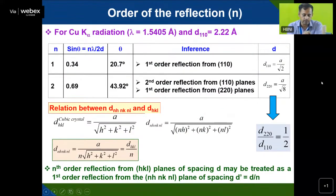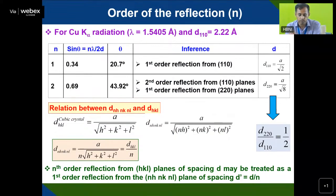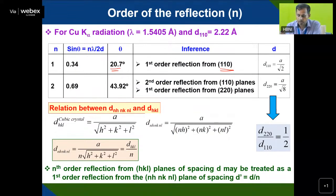Regarding the order of reflection: 2d sin θ = nλ, where n can vary from 1 to n. For n = 1 it is first order, n = 2 second order, and so on. For example, using copper K-alpha wavelength of 1.5405 Å, the D-spacing for the (110) plane is 2.22 Å, giving a peak at 2θ = 20° with sin θ = 0.34. For a cubic crystal, D₀ = a/√2. For the second order peak, it appears at 43.92°, and the (110) second order is equivalent to the (220) first-order reflection — D(220)/D(110) = 1/2.